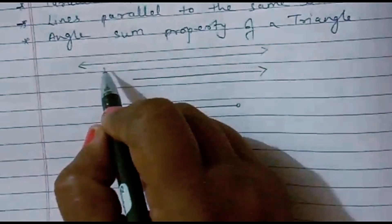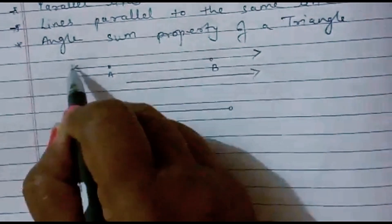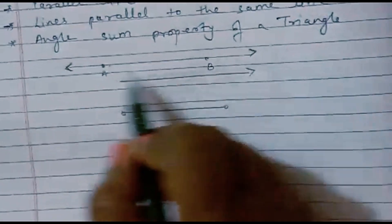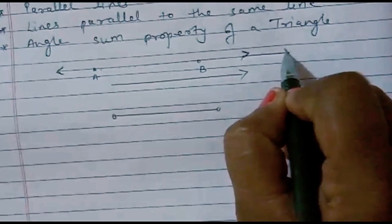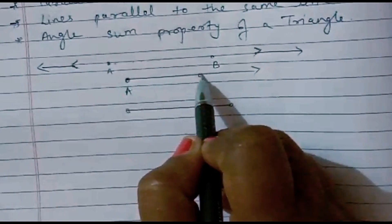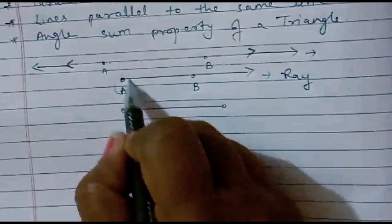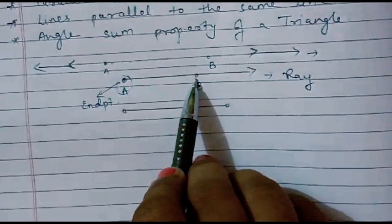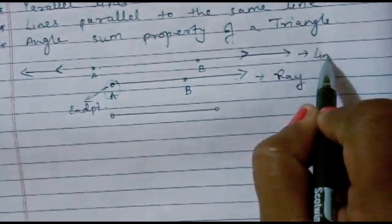The first example is a line. You can see this is line AB, and we know that a line is a set of infinite points — that means it has no endpoint. I have shown it by an arrow, meaning it can be extended in any direction. The second one is ray AB. A ray is a part of a line having one endpoint. Here you can see the endpoint of the ray is A, so it can be extended only in the direction of B, but not in the direction of A.